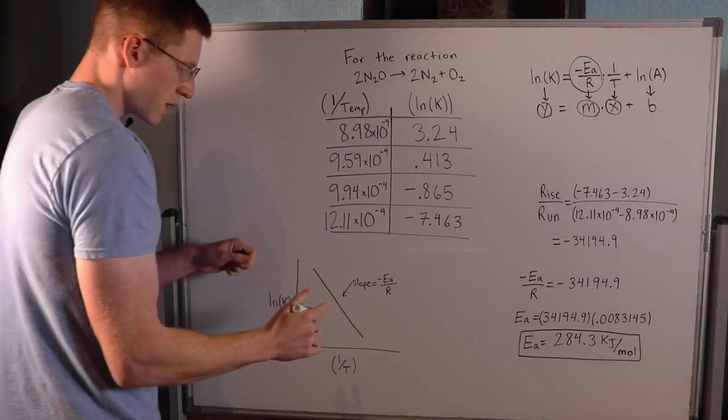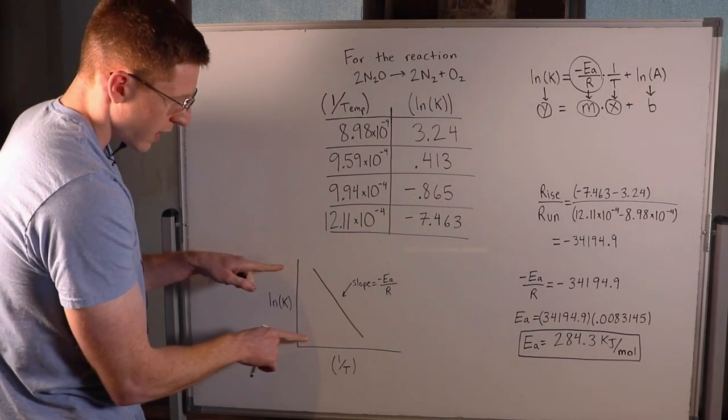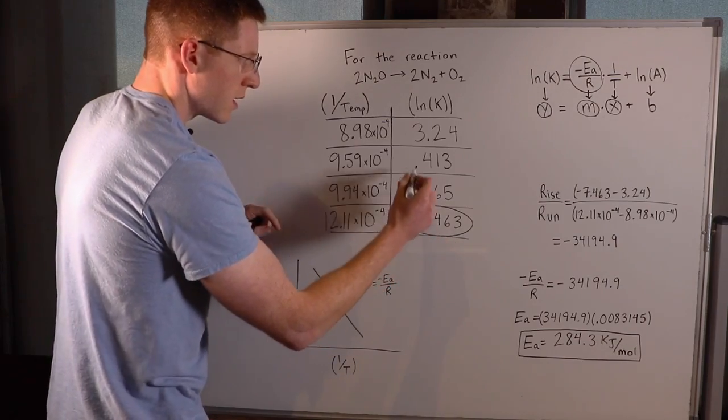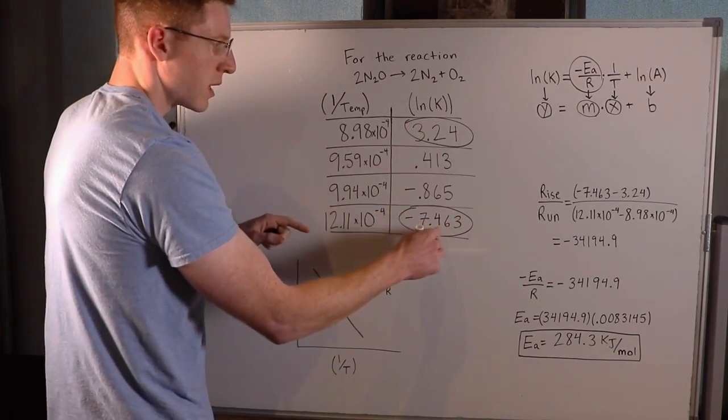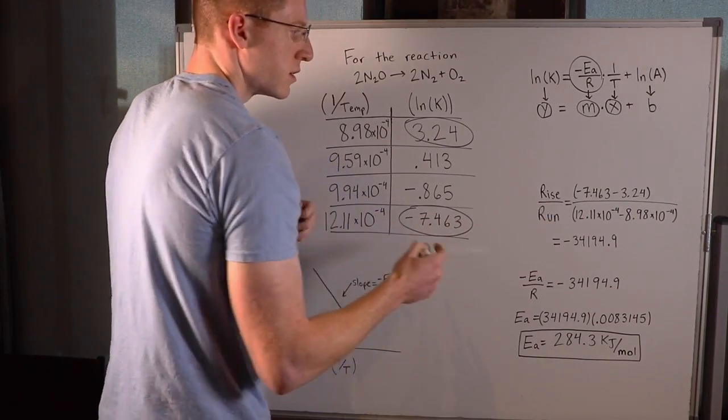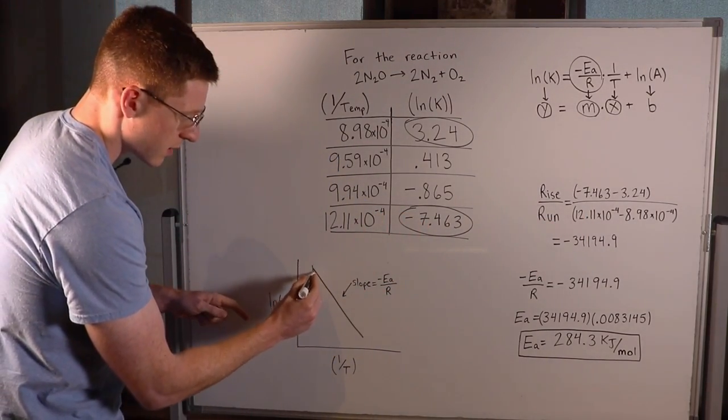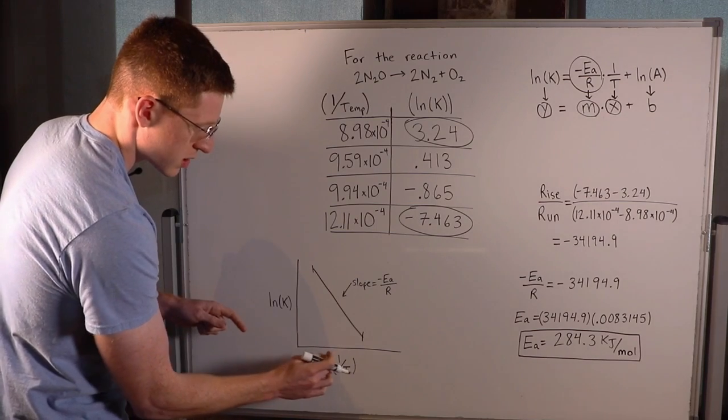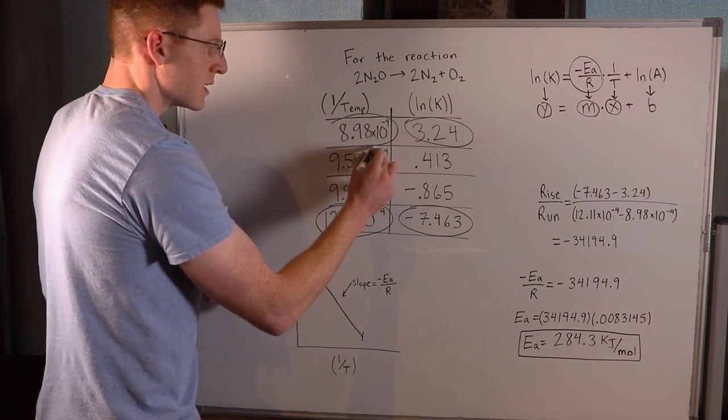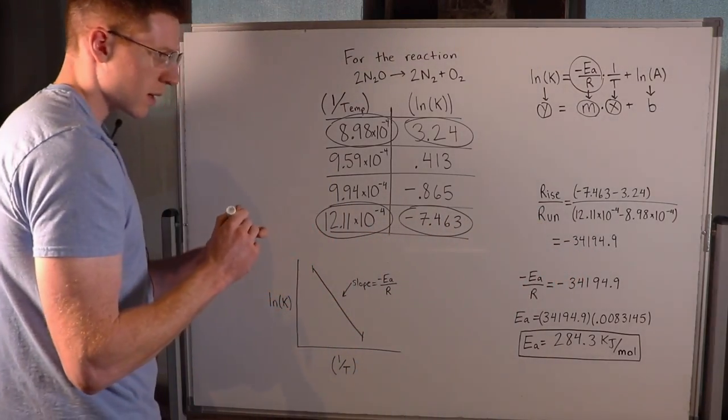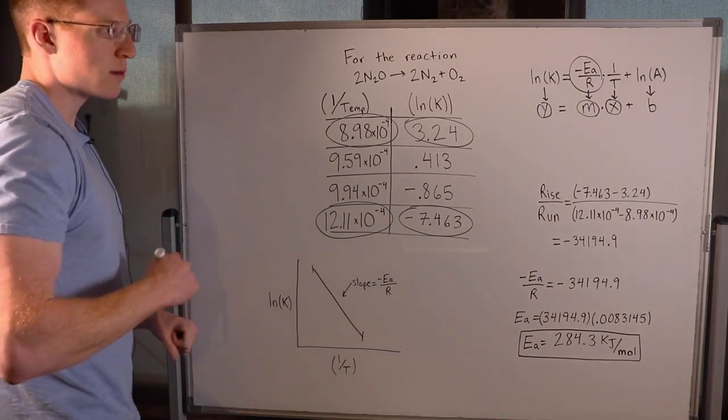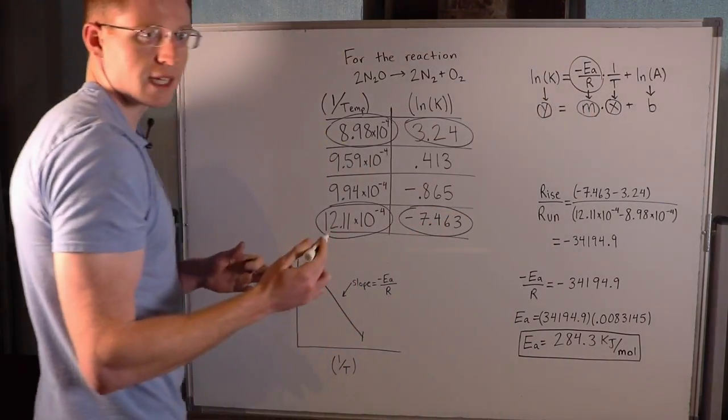The rise is the change on the y-axis, ln(k), so our last value minus our first value. That's the numerator. The run is the change on the x-axis, 1/T, in the denominator. I calculated -34,194.9, which equals the slope term -Ea/R.